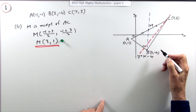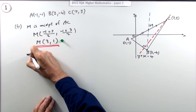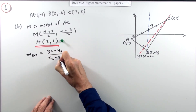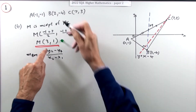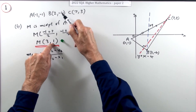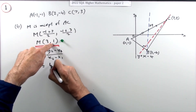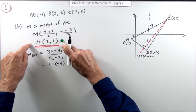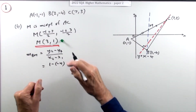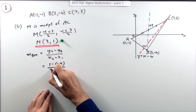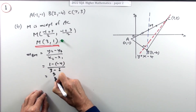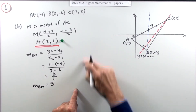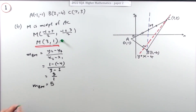To get the gradient of line BM, I have two points on it, so: gradient of BM = (1 − (−4)) / (3 − 2) = 5 / 1 = 5. It's a steep line — one step along and five steps up — and looking at the diagram it does appear very steep. That gets a mark.